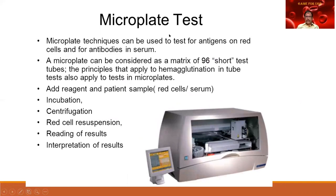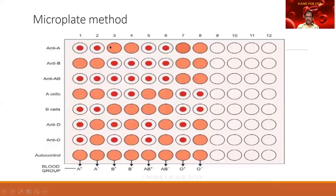Another method is the microplate method, based on the ELISA principle. The apparatus has multiple wells, each coated with antisera. Patient cells are added as the source of antigen, incubated, centrifuged, and the reading is taken. Multiple samples can be run simultaneously, but samples must be carefully labeled and entered into the correct well. ELISA is also a university question in microbiology, with applications including HIV and hepatitis detection.